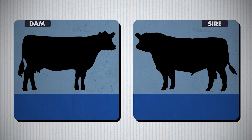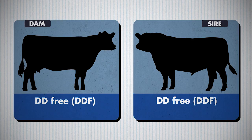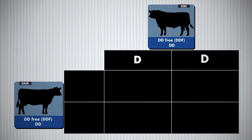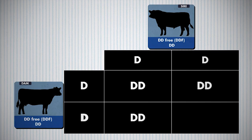In the final scenario, let's assume both parents are DD-free, designated with capital D and capital D. Put the sire's DD at the top of the table and the dam's DD at the side, then put the corresponding letters in each box in the columns and rows. As you can see, 100% of the progeny in this mating would be DD-free, and there is no risk at all of the mating resulting in the condition.